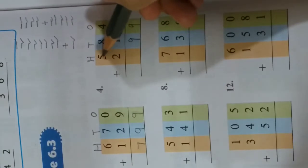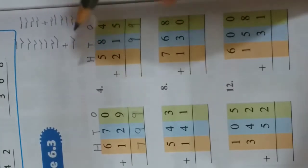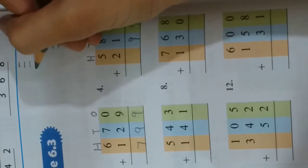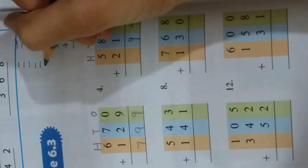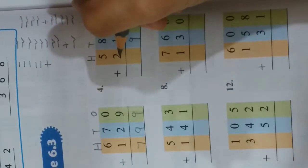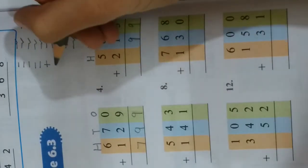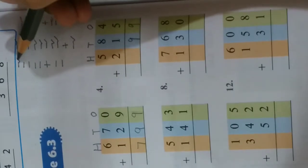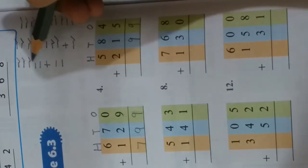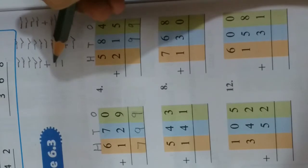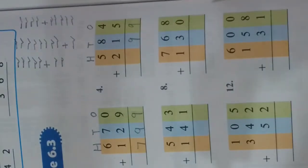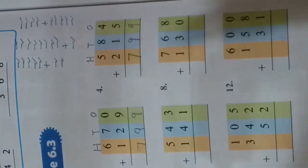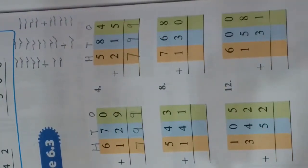Now at hundreds place on top you have 5 — draw 5 lines. Put a plus sign. Below you have 2 — draw 2 lines. Count all: 1, 2, 3, 4, 5, 6, 7. So 7 will be written over here.